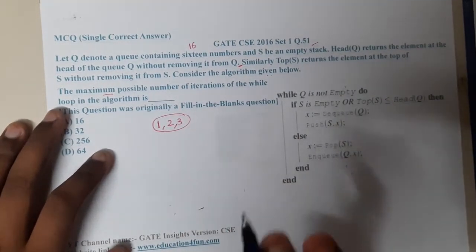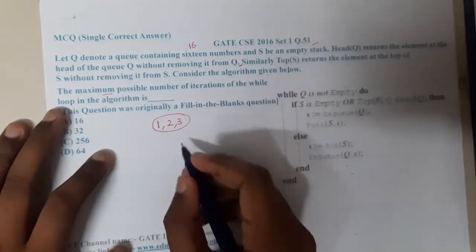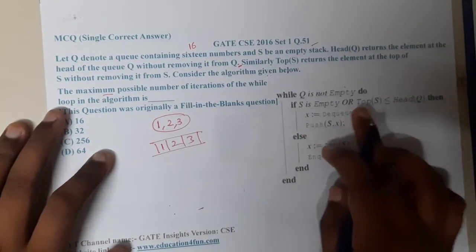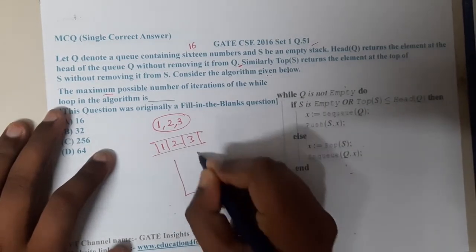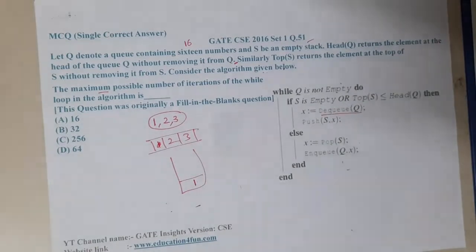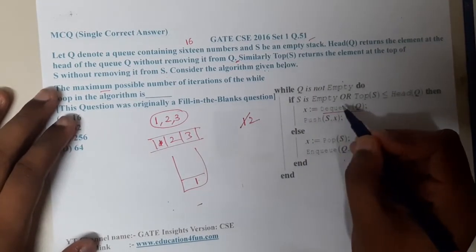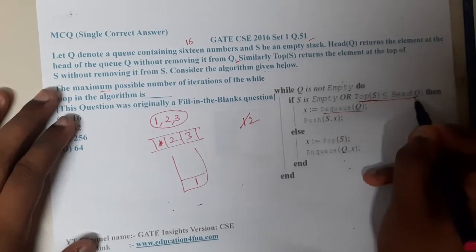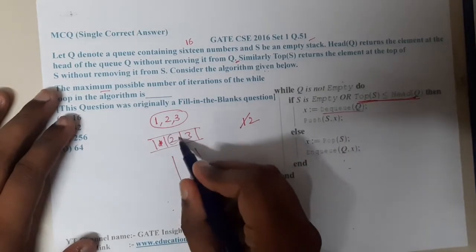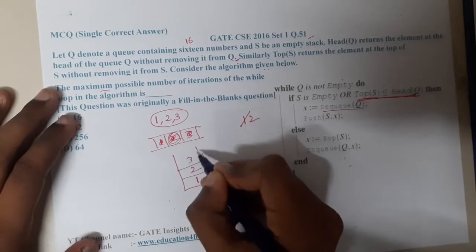Initially, one, two, and three are in the queue and the stack is empty. Since S is empty, the first element (1) is dequeued and pushed onto the stack. In the next iteration, top of stack is compared with head of queue. Since each successive element is greater, they are also dequeued and pushed, until the queue is empty.